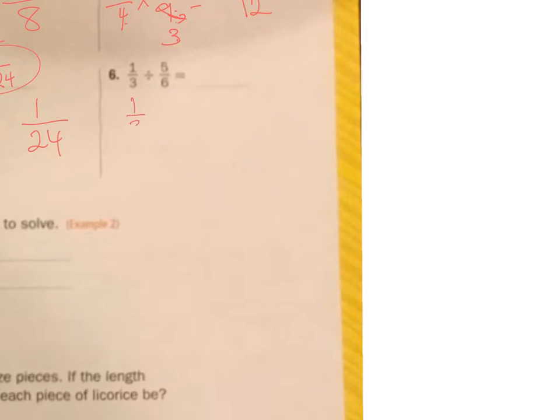So I'm going to keep the first thing, change the sign, and change to the reciprocal on the last number. So I see that I could divide this by 3 and divide that by 3, doing the same to the top and the bottom. That becomes 1, that becomes 2. 1 times 2 is 2, 1 times 5 is 5. That's a fraction. That is my answer. 2/5.